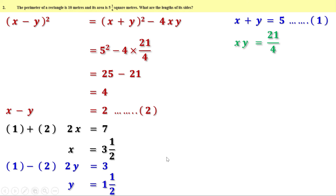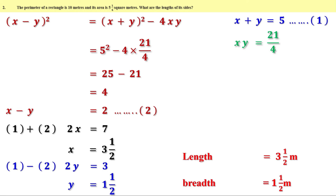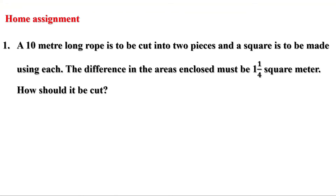Therefore, the length of the rectangle is 3½ meters and the breadth is 1½ meters. Today we discussed some different types of problems. There is a homework: a 10-meter long rope is to be cut into two pieces and a square is to be made using each; the difference in the areas enclosed must be 1¼ square meters — how should it be cut? In the next video we shall discuss the remaining problems. Till then, bye.